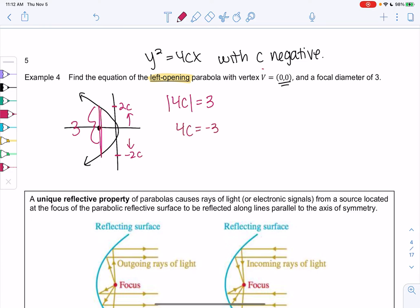So in this case, 4c is -3, because we decided it's negative. And then we actually don't have to solve for c, because the formula is y² = 4cx. So y² = -3x. So that coefficient is actually measuring the focal chord.